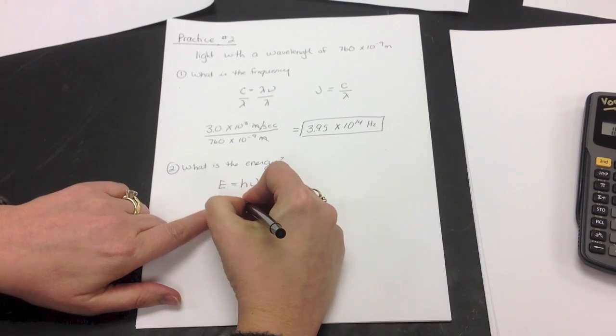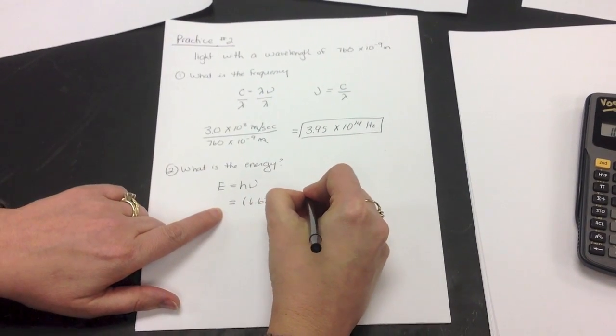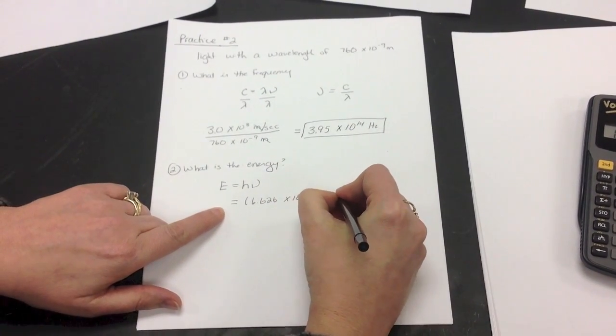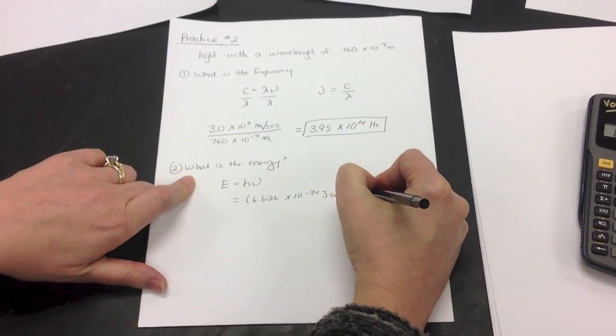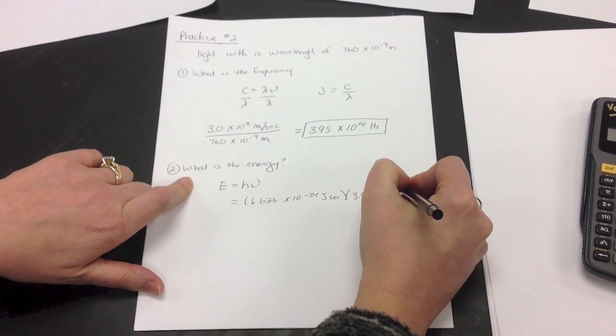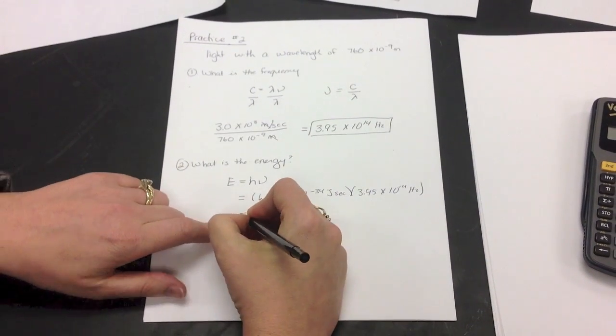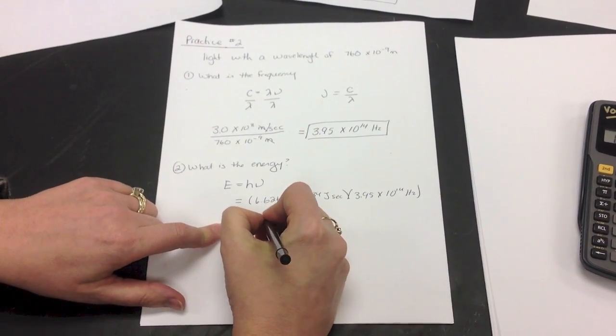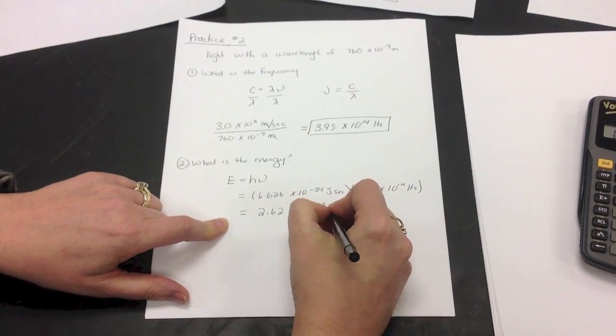E equals H times nu. And again, we're just going to plug in 6.626 times 10 to the negative 34 joule seconds times, in this case, our frequency, 3.95 times 10 to the 14th hertz, or again, per second, whichever way you want to write it. And you'll end up with 2.62 times 10 to the negative 14 joules.